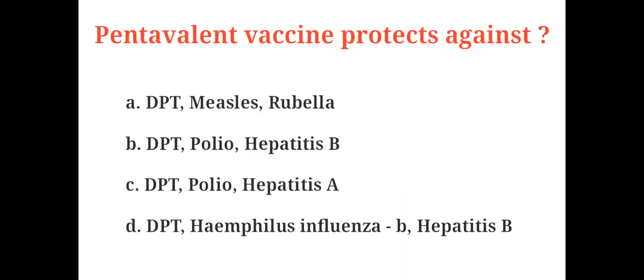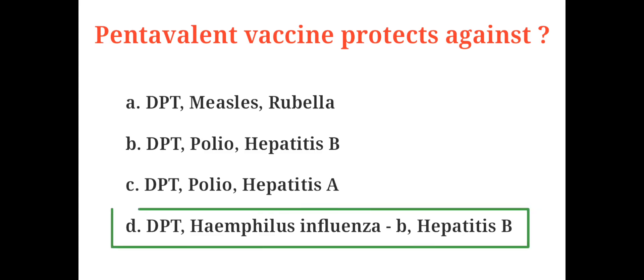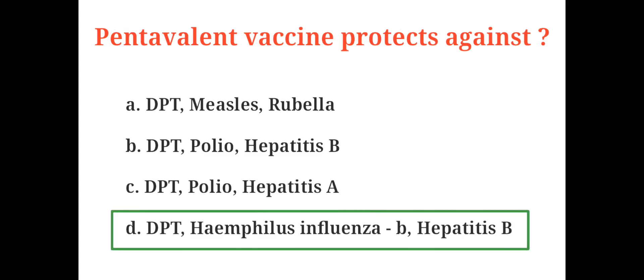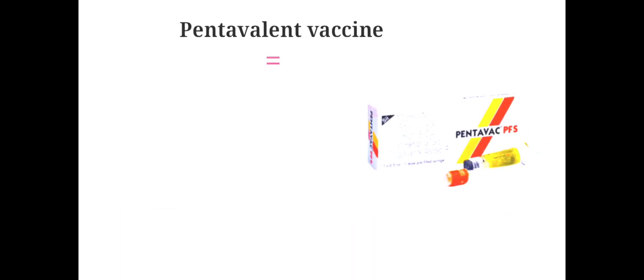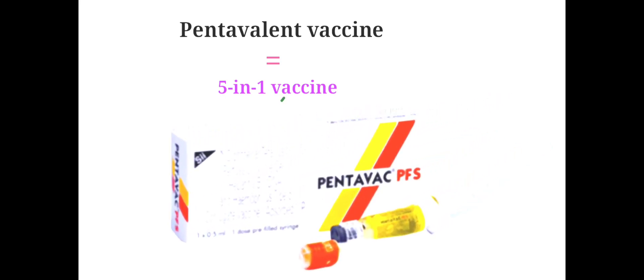Pentavalent vaccine protects against A. DPT, measles, rubella, B. DPT, polio, hepatitis B, C. DPT, polio, hepatitis A, D. DPT, Haemophilus influenzae B, hepatitis B. And the correct answer is D. DPT, Haemophilus influenzae B, hepatitis B. Pentavalent vaccine, also known as the 5-in-1 vaccine, is a combination vaccine with 5 individual vaccines conjugated into 1, intended to protect against diphtheria, tetanus, pertussis, Haemophilus influenzae type B, and hepatitis B.